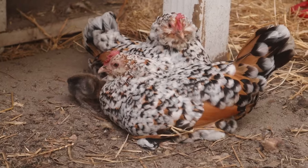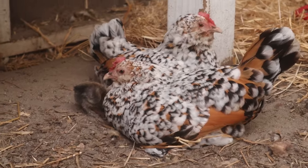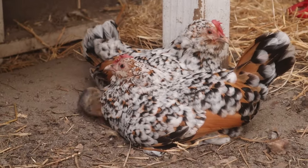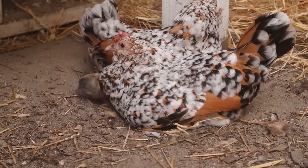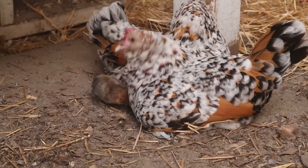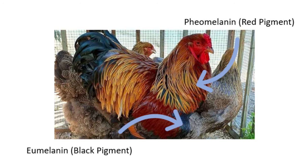The E-Series alleles are located on the E-Locus and are responsible for the distribution of the black and red pigments on a chicken. These alleles determine which cells in which areas will produce red or black pigment.